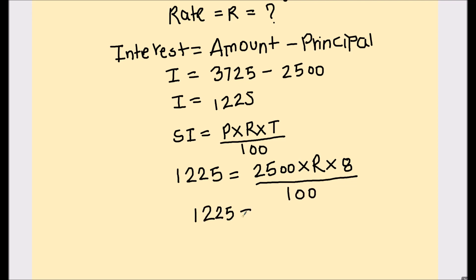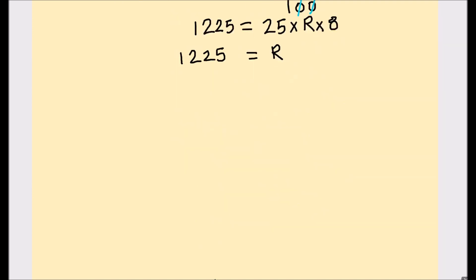Left hand side is 1225. This zeros in the numerator gets cancelled with the zeros in the denominator. We have 25 times R times 8 on the right hand side. And to find the value of R, we will transpose 25 times 8 to the left hand side. That's going to be R equals 1225 divided by 25 times 8.